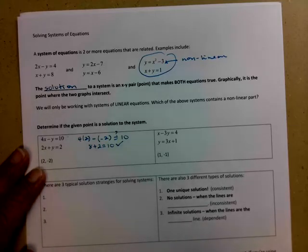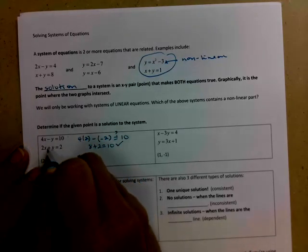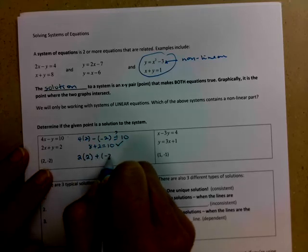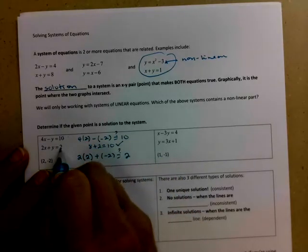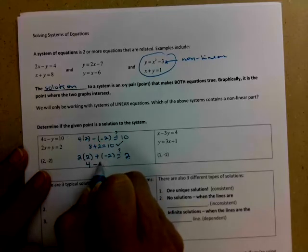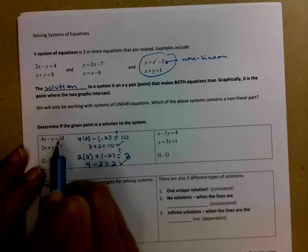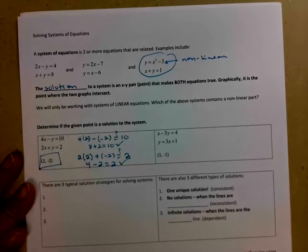But in order to be a solution to the system, it has to also work in the second equation. So here we go, into the second equation. 2 times x being played by 2, we have lots of 2s here, plus y, so plus the negative 2, is that equal to 2? So that's 4 plus a negative 2, that's the same thing as minus 2. Is that equal to 2? It is. So since the point makes both equations true, it is in fact the solution to the system.